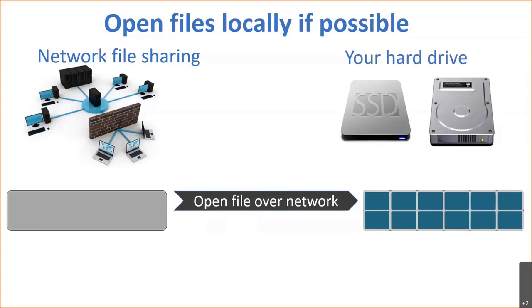Each packet includes a header and footer containing source and destination network address, error detection codes, and sequencing information to reassemble the file. The data is brought over into a temporary file folder, but it's still constantly pushing data back to the network. If one of those data packets gets dropped during transfer, you can end up with file corruption — something that is not a fun experience.